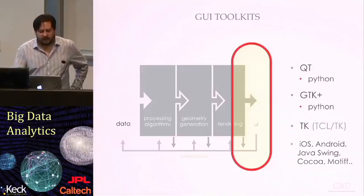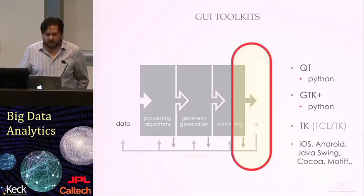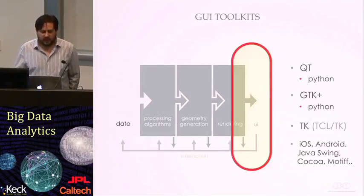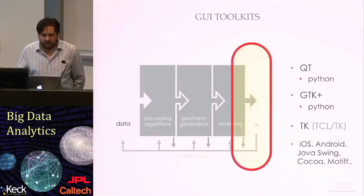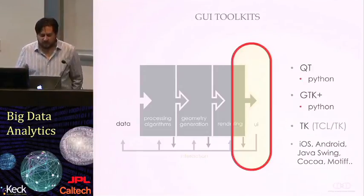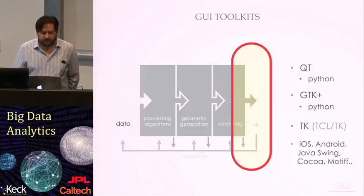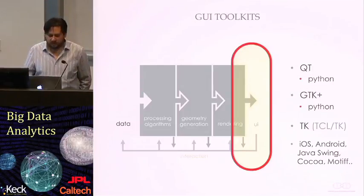The last part to this whole thing is the interface, the user interface. There are many GUI toolkits that you can use to create your own tools. Qt has become a standard just because it's one of the few graphic user interface toolkits that actually works on many platforms like Linux, Mac, and Windows. There's other GUI toolkits like GTK and TK, which is part of the Tcl/TK scripting language. And of course, the more modern GUI toolkits that are very popular are the ones for iOS for app development, as well as Android.